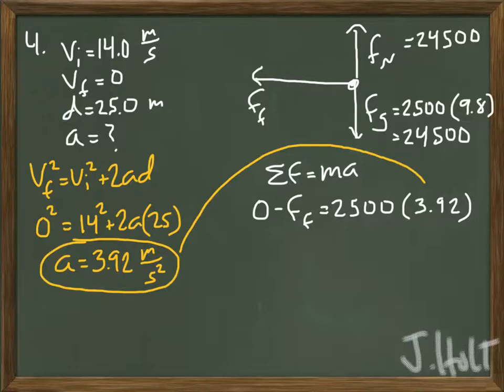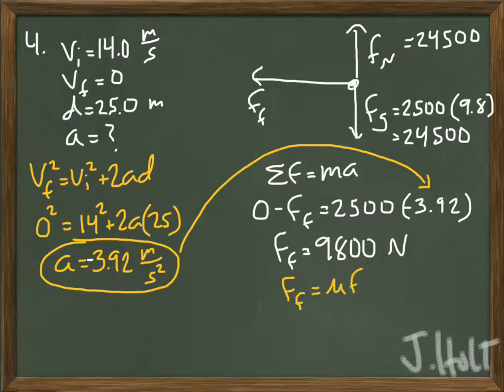and we can set that equal to mass, which is given, times acceleration, which we figured out. Now, it's a negative acceleration, because we're slowing down. So now we can solve for the force of friction.